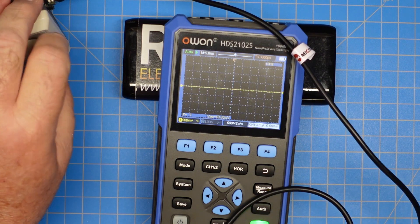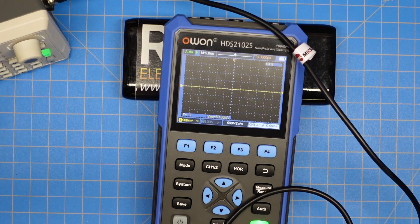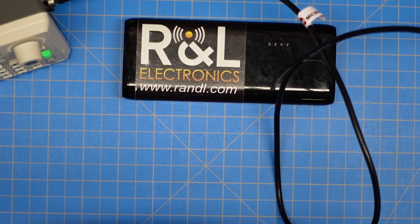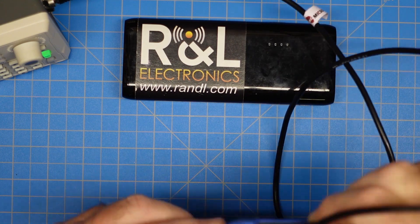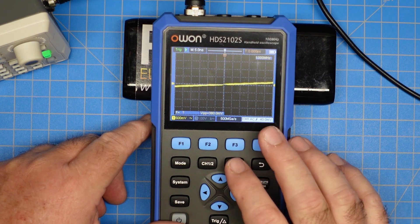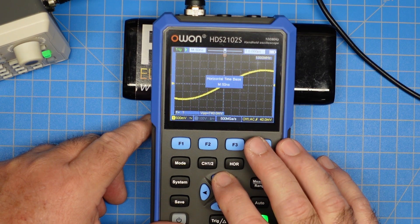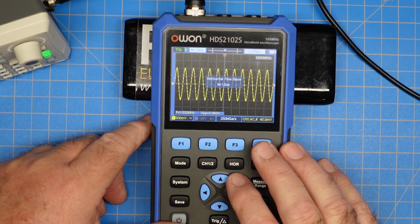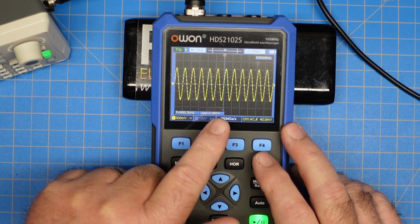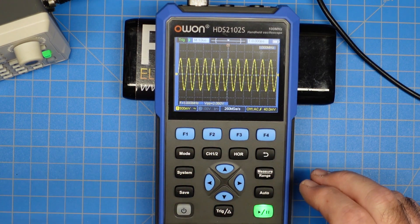We're going to set our signal to one megahertz and we're going to put this in channel one on our oscilloscope and we'll adjust our time base. Okay, so we're at one megahertz and what I want you to notice is 2.060 voltage peak to peak.